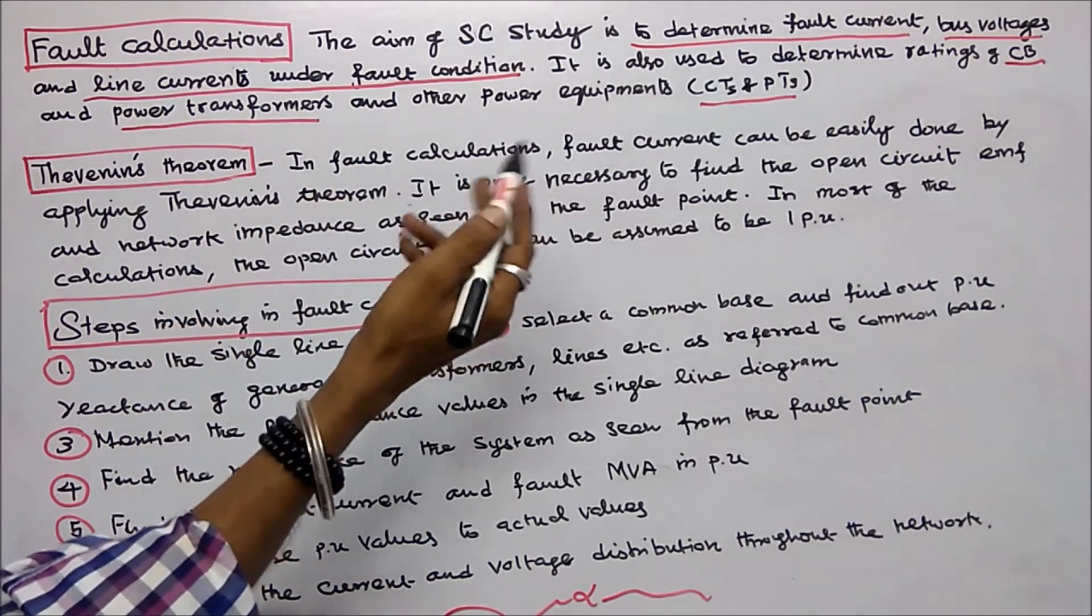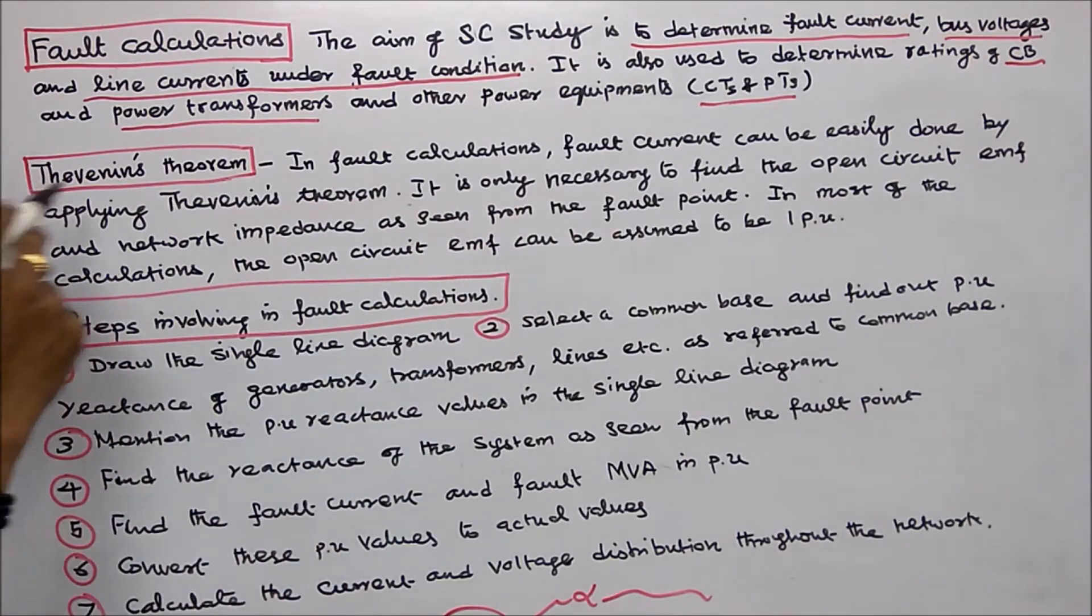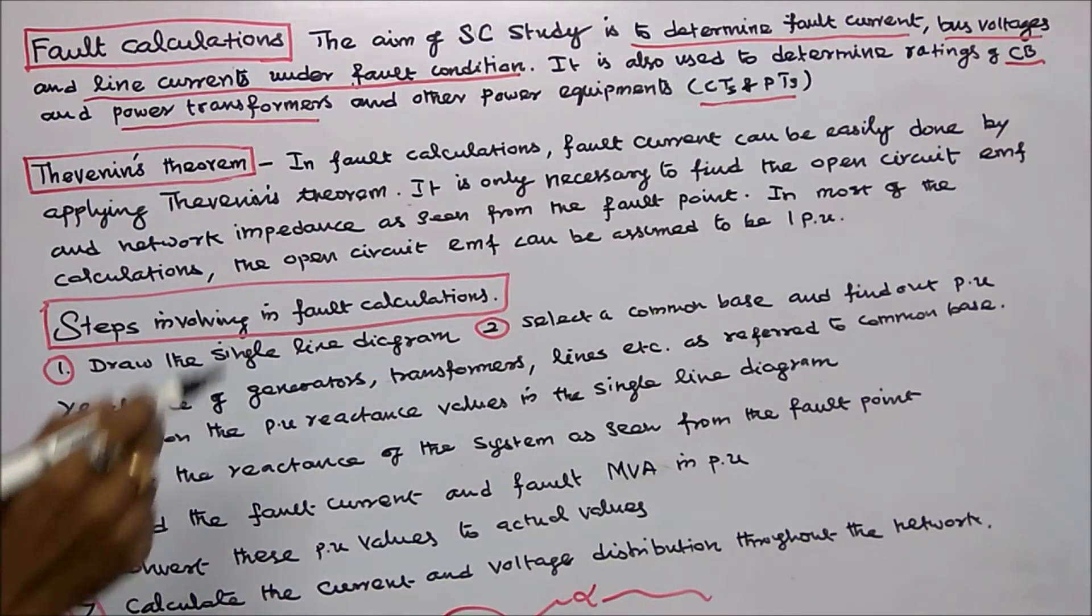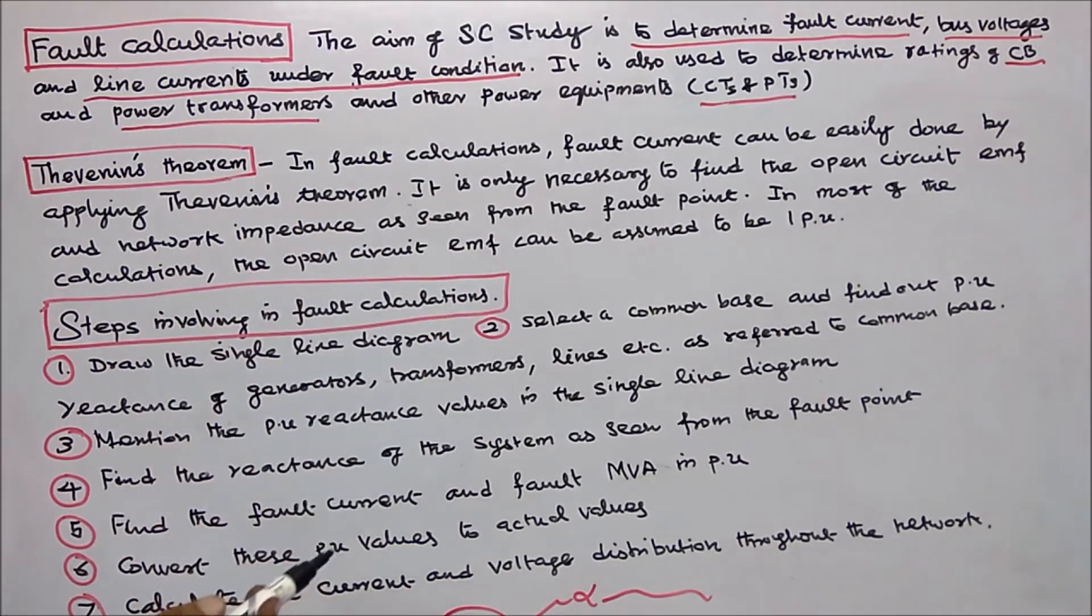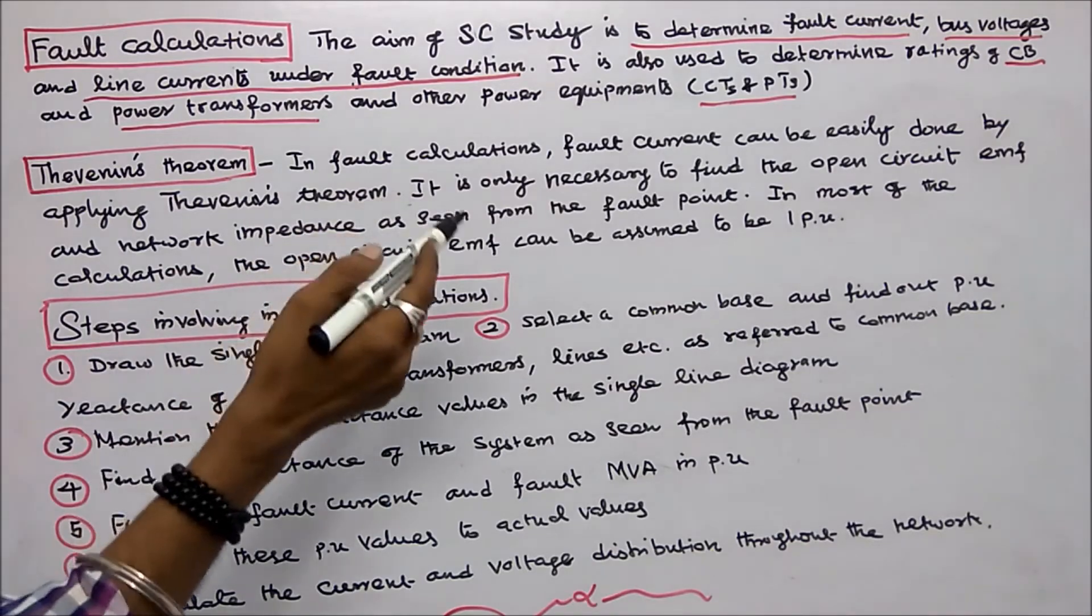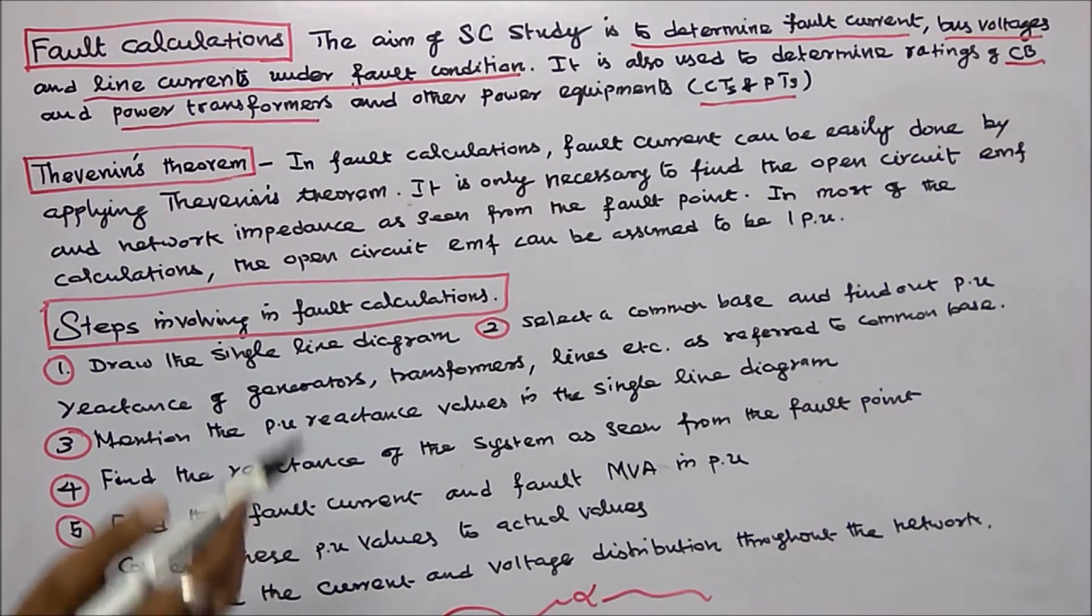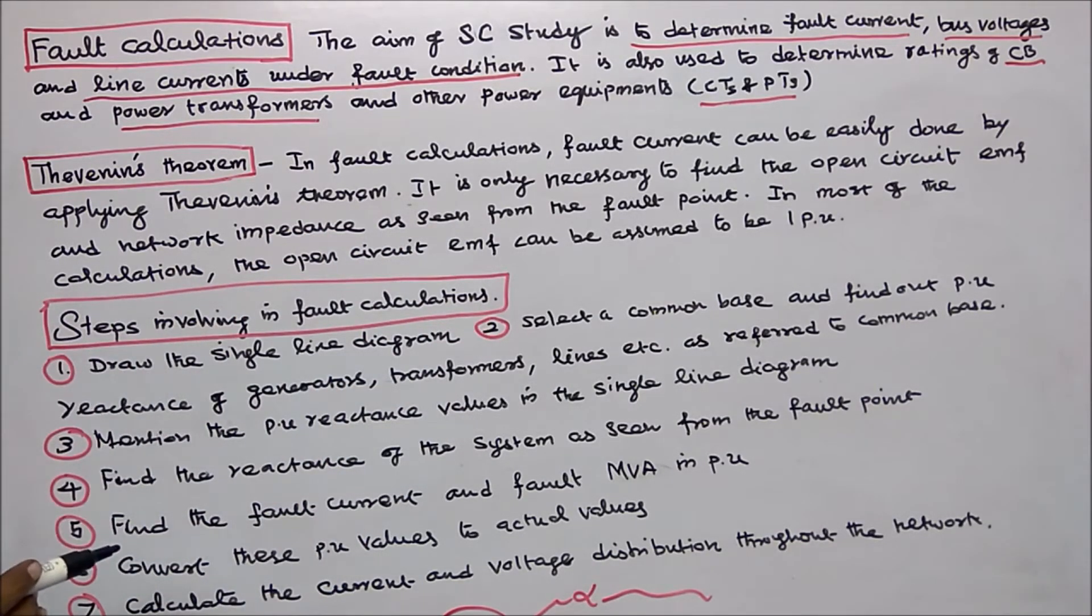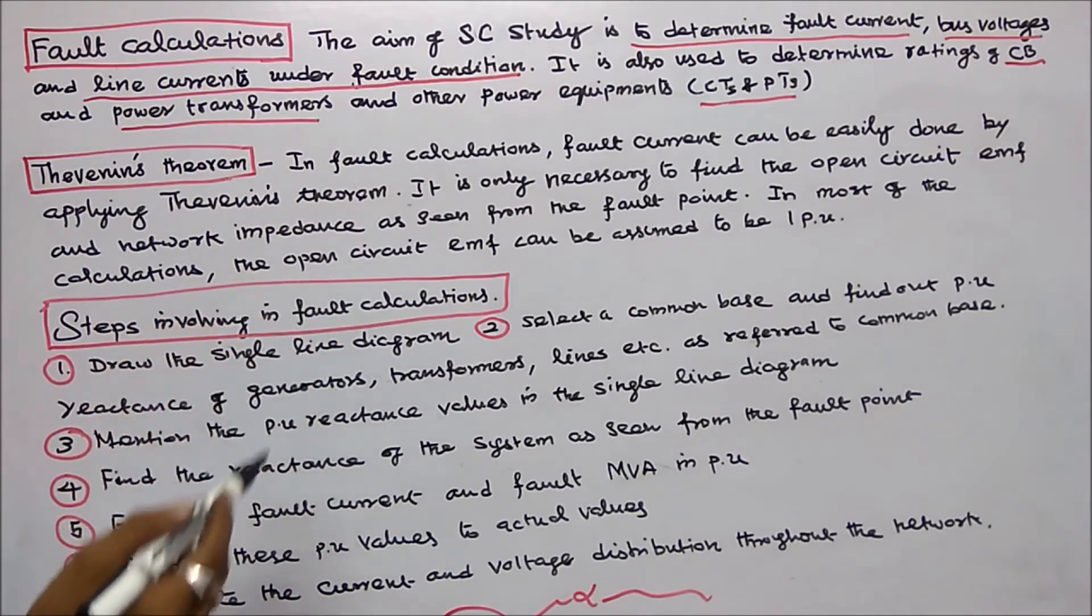Fault current can be easily done by applying Thevenin's theorem. It is only necessary to find out open circuit EMF and network impedance as seen from the fault point. In most of the calculations, the open circuit EMF can be assumed to be one per unit.